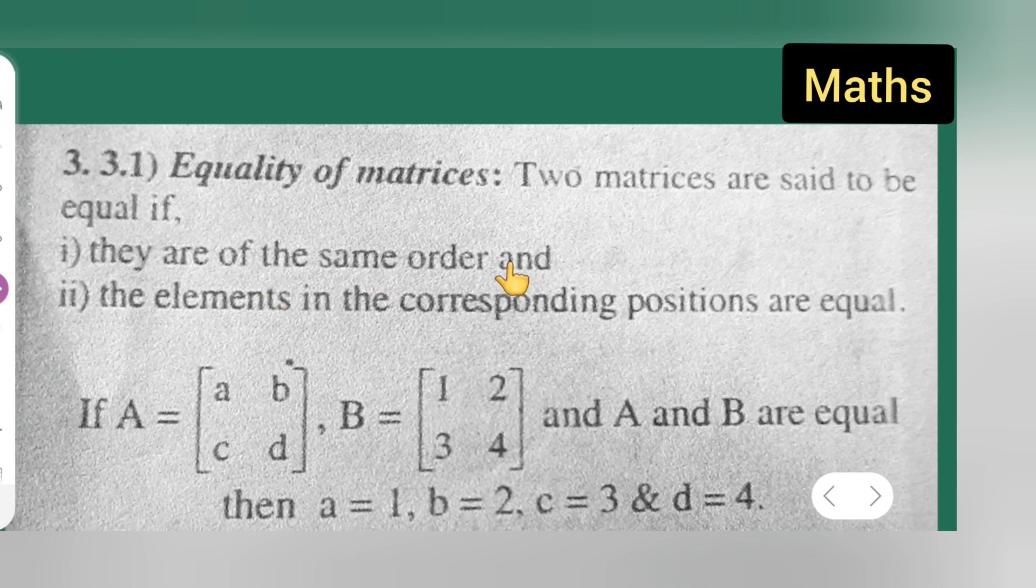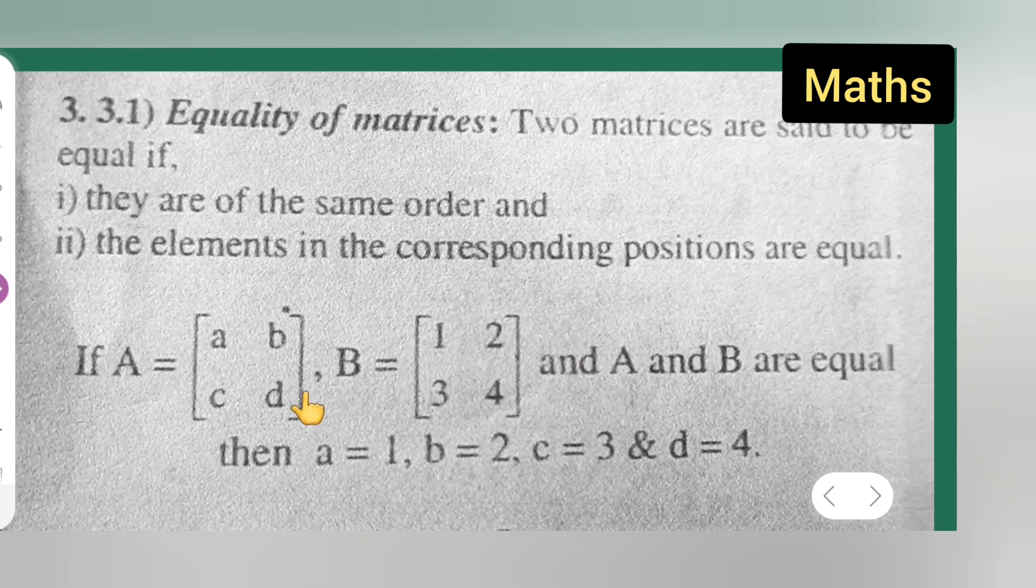When two matrices are said to be equal, it should satisfy these two conditions: they are of the same order, and the elements in the corresponding positions are equal.